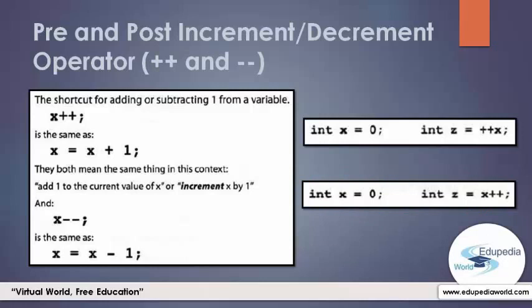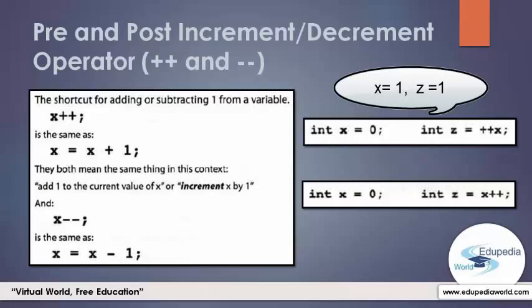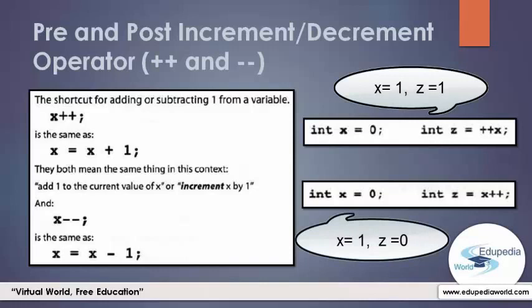In the first scenario with the pre increment expression, at the end, the value of x is 1 and the value of z is also 1. But in the second scenario with the post increment expression, the value of x is 1, but the value of z is 0. In the pre increment expression, the value of x becomes updated within its statement, so z can get the updated x value. In the post increment expression, the value of x becomes updated in the next statement — that's why z is 0. When z gets a copy of the x value, x has not yet been updated, so z gets what x is currently holding, which is 0.